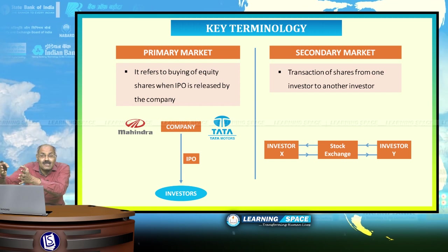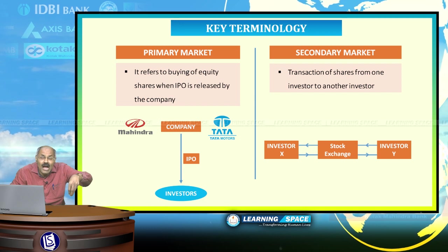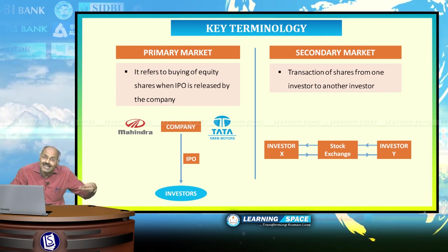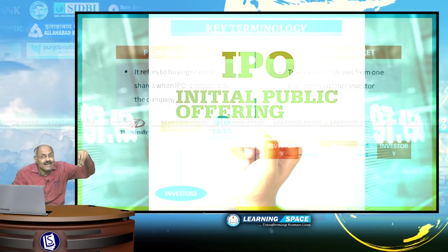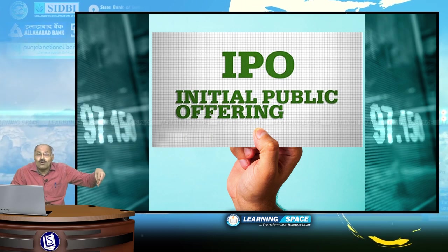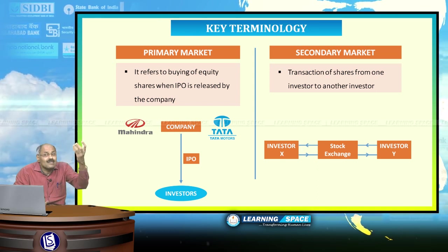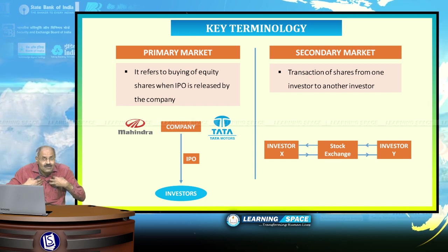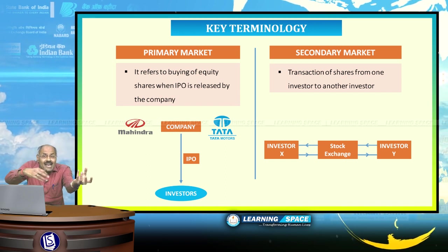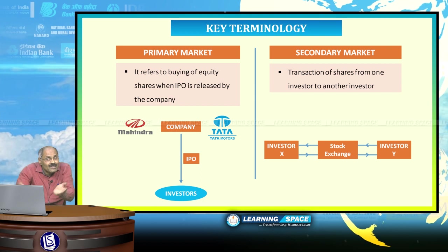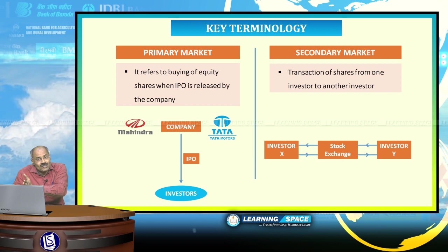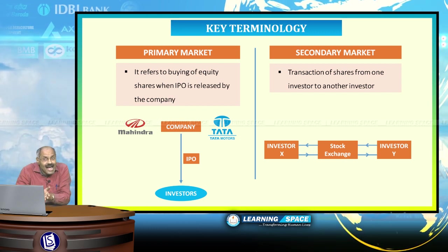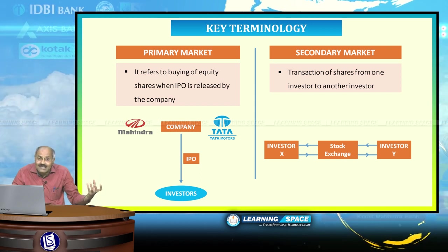Primary market versus secondary market. Primary market refers to buying equity shares directly when the IPO is released by the company — for example, purchasing shares directly from Tata Motors or Reliance Industries when they issue shares. That is the primary market. Secondary market is when I have purchased shares and want to sell them — I sell to a friend through a stock exchange, which acts as the medium. So secondary market is the transaction of shares from one investor to another investor using stock exchanges.